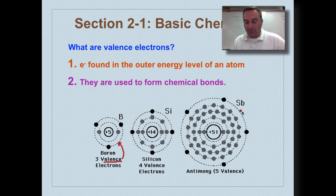And then in antimony, which has 51 electrons, the only ones that really matter are the one, two, three, four, five out here. Because those are going to be used to make chemical bonds.